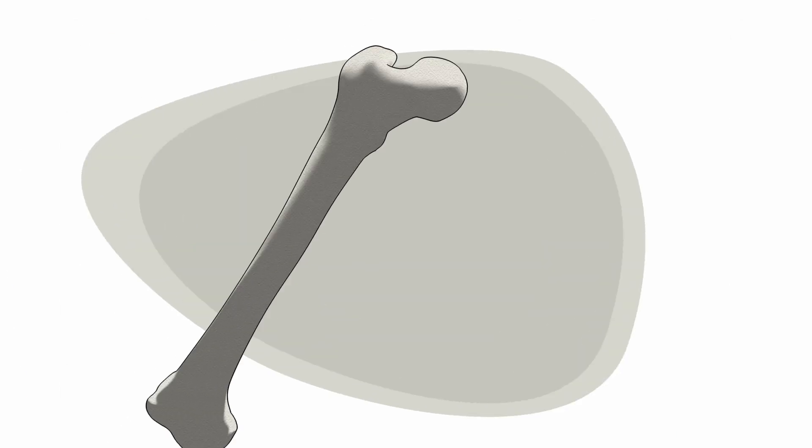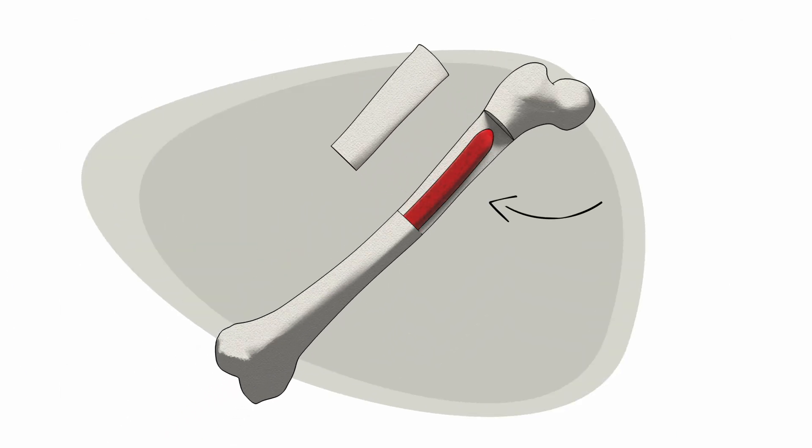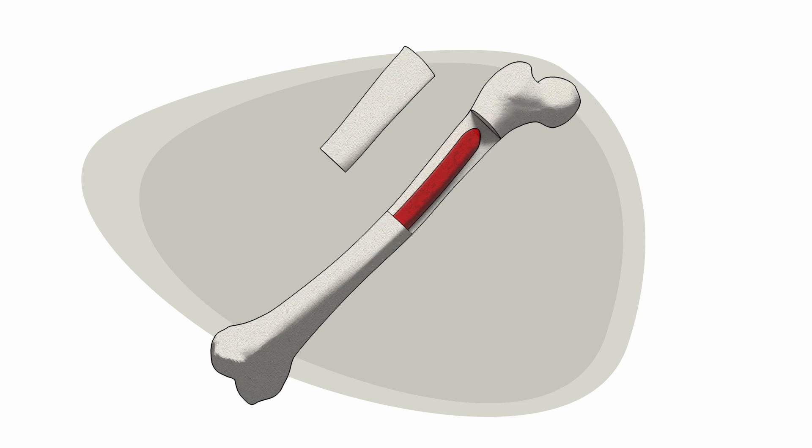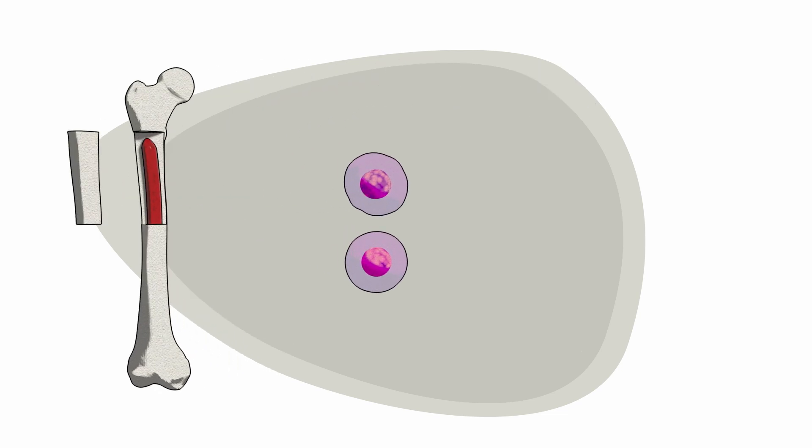CML is a type of blood cancer that starts in the bone marrow, the soft inner part of the bone where stem and blood cells are formed.